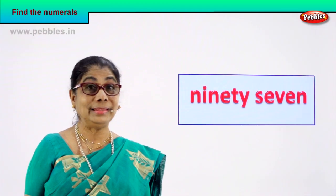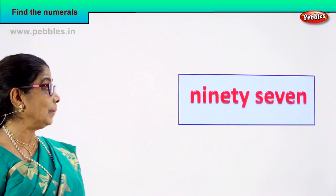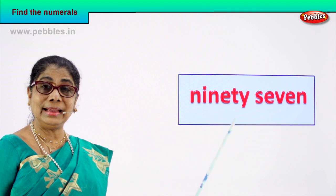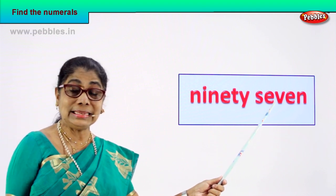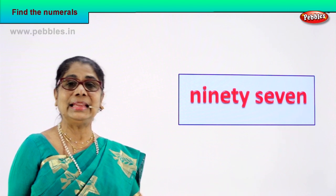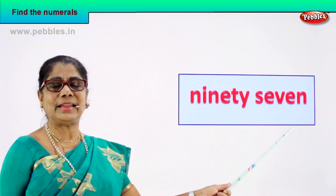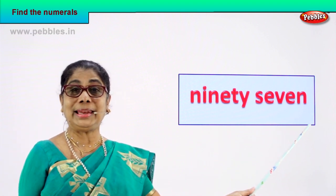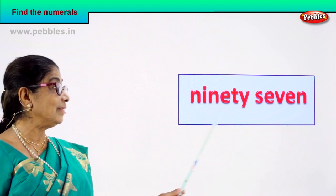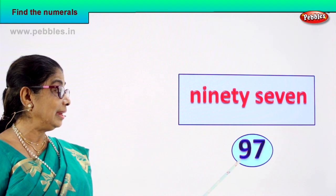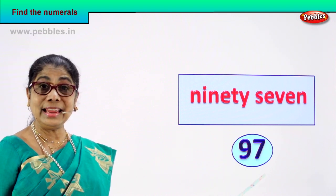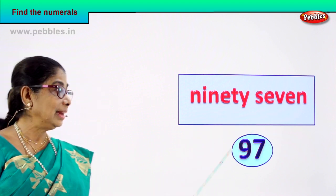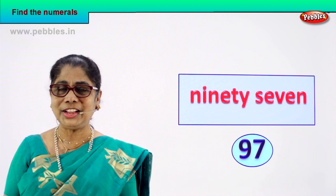Shall we go to another number name and you can guess the numeral? N-I-N-E-T-Y is ninety, S-E-V-E-N is seven — read this: 97. How can we write the numeral for 97? 9 and 7 — 97. 97 is the numeral for this number name. Good!